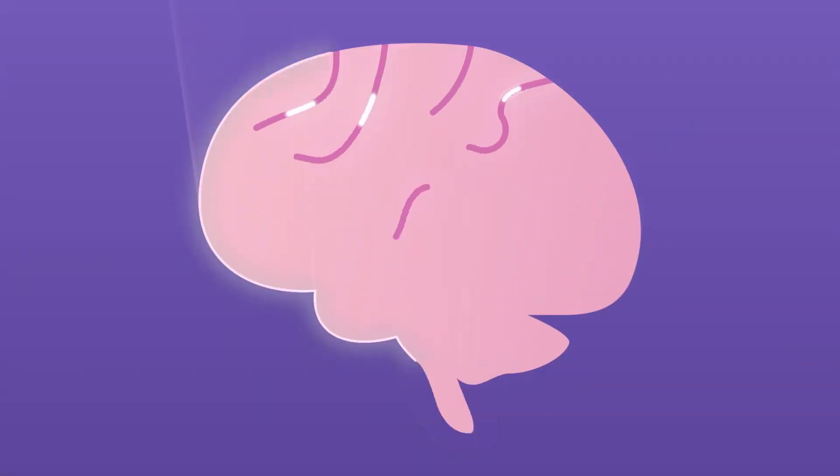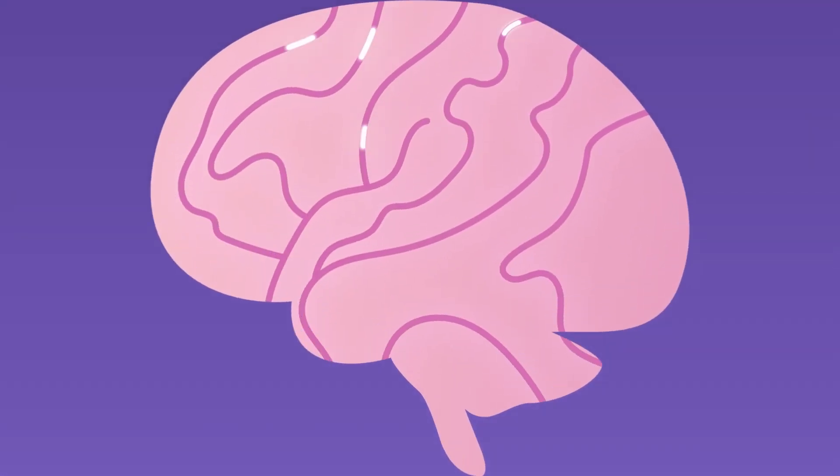But how does our brain work when we see visual content? The human brain processes visuals 60,000 times faster than words. This is also the reason why humans are called visual creatures.